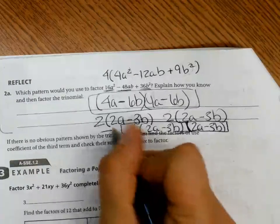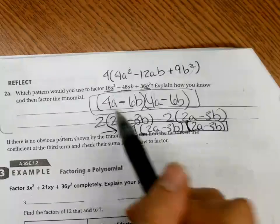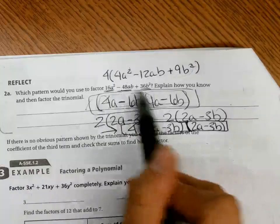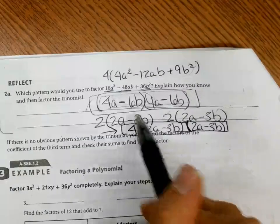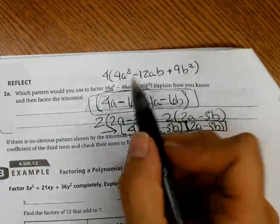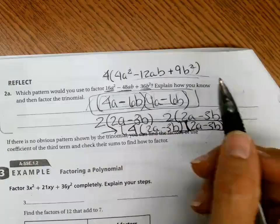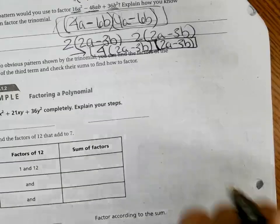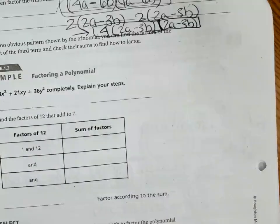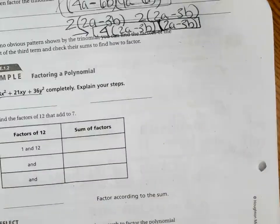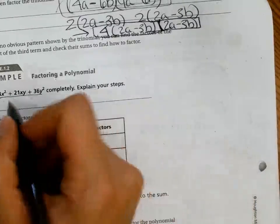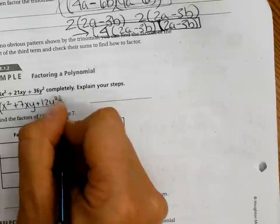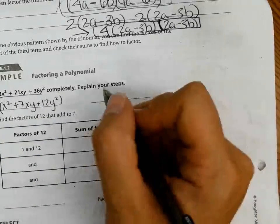So over here, is there something that I can pull out first? A 3, right? So 3 times x squared plus 7xy plus 12y squared. Now what? Perfect square? Is that one a perfect square? Is 12 a perfect square? No. So I just have to do my factors.